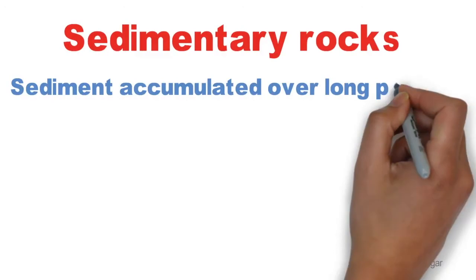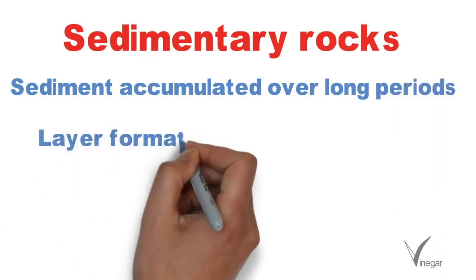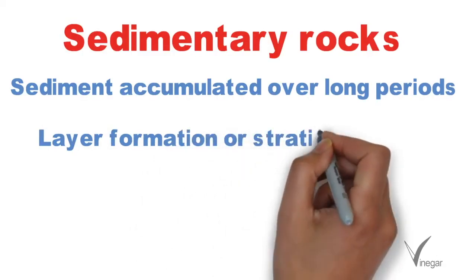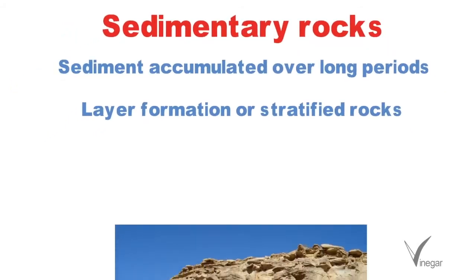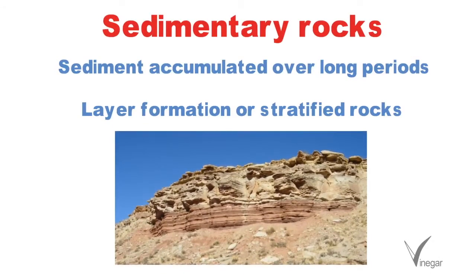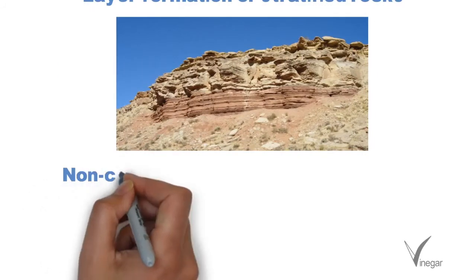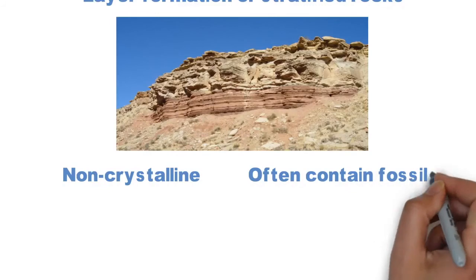Now let's talk about sedimentary rocks. Sedimentary rocks are formed by accumulation of sediments over a long period of time. They are unique in the sense that there is a layer formation or stratification — therefore you find them in the form of stratified rocks. These layers or strata can have thickness ranging from a few inches to a few feet. Rocks formed can be either coarse or fine grained, soft or hard. The material from which sedimentary rocks are formed can be brought by rivers, glaciers, winds, or even animals.